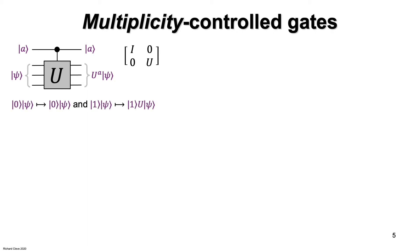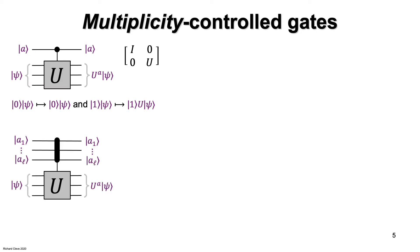U to the zero is identity — do nothing. U to the one is just U — apply U. So in the computational basis, the control qubit is a number indicating how many times U should be applied to the target: zero times or one time. We can define a more general type of controlled-U gate where there are l control qubits, and the number of times that U is applied is an l-bit integer. In this case, U can be applied zero times, once, twice, three times, all the way up to 2 to the l minus 1 times.